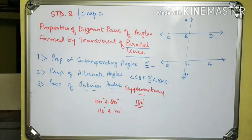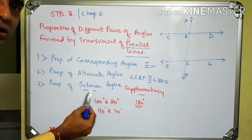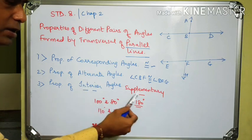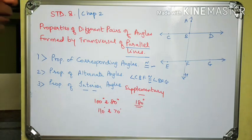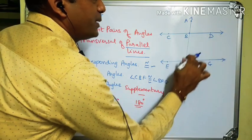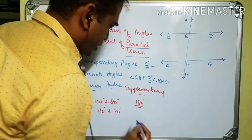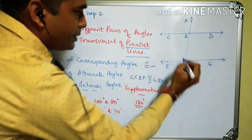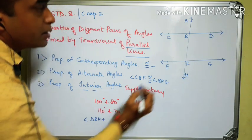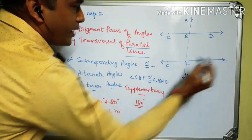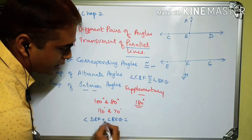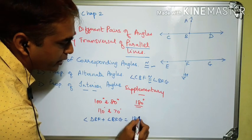To repeat the property: each pair of interior angles formed by two parallel lines and the transversal is supplementary. For example, angle DBF and angle BFG form a supplementary pair, meaning angle DBF plus angle BFG equals 180 degrees.